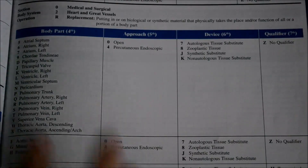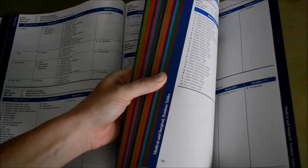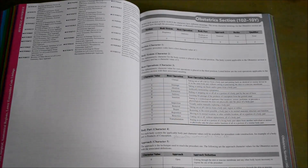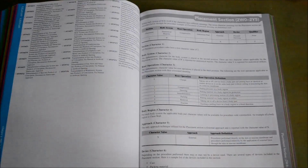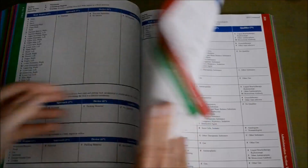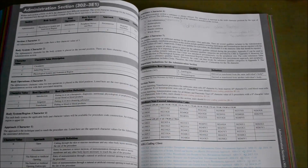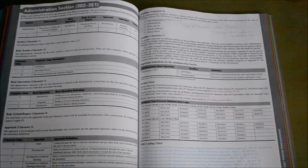That is how you build your code and navigate the table. After the Medical and Surgical sections, the next section is Obstetrics, covering anything with pregnancy and delivery. Then comes the Placement section, which covers anything externally placed on the body like dressings or packing. Next is the Administration section — for example, a bone marrow transplant is not in the Medical and Surgical section; it is in the Administration section, where you can find the table used to create that code.